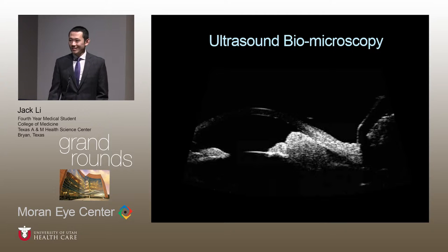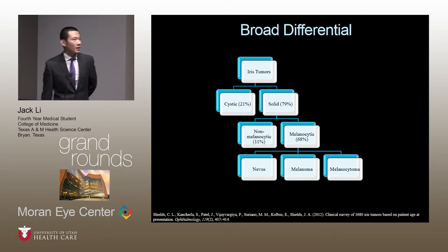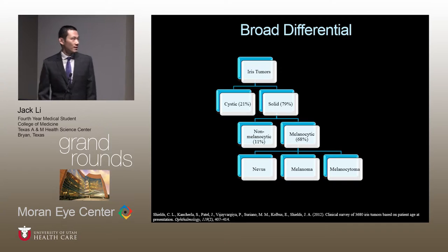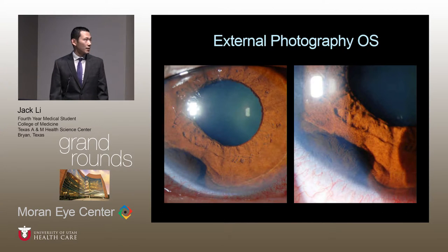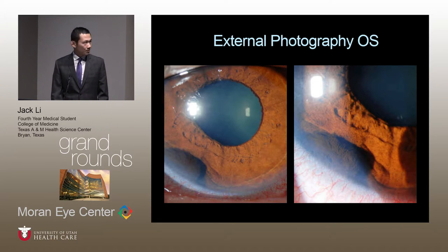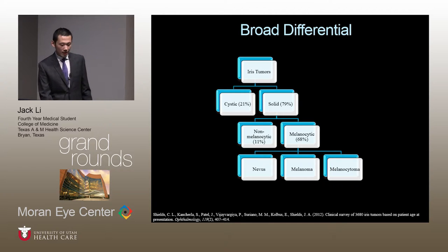Based on the UBM and our clinical examination, this appears to be more of a solid tumor. Solid tumors are broadly divided into melanocytic and non-melanocytic. Dark or melanocytic lesions comprise the majority. Based on our clinical photo, this appears to be more of a melanocytic lesion. The most common differential for melanocytic lesions are iris nevi, melanoma, and melanocytoma.